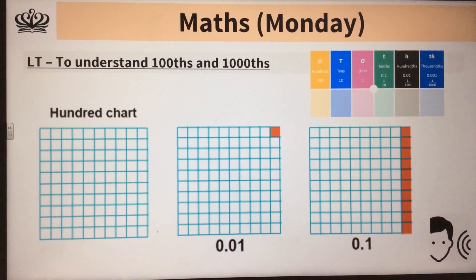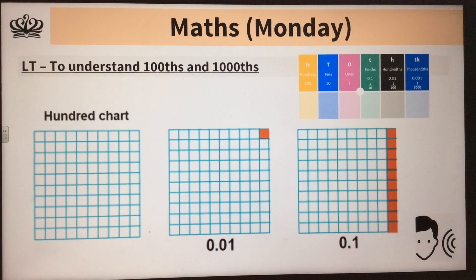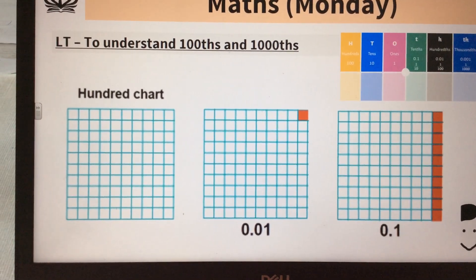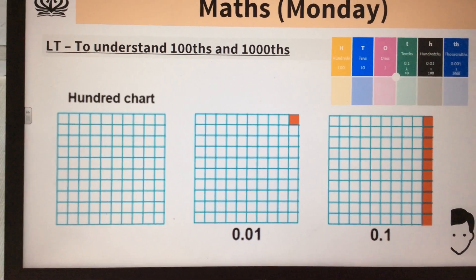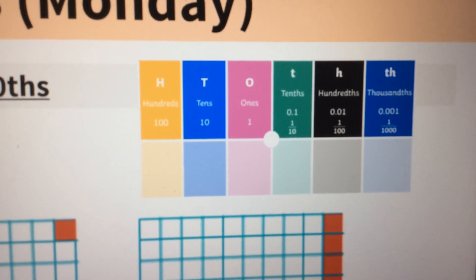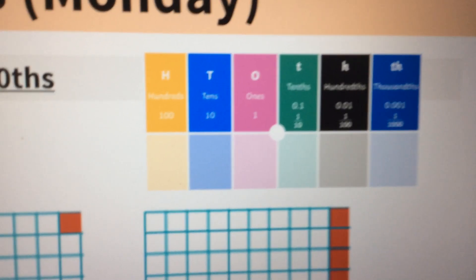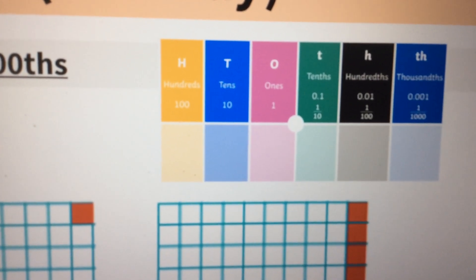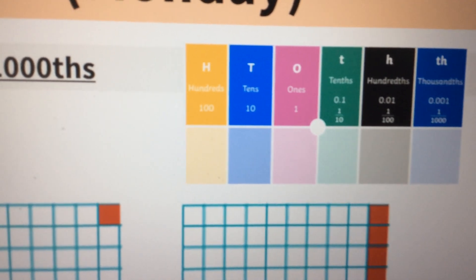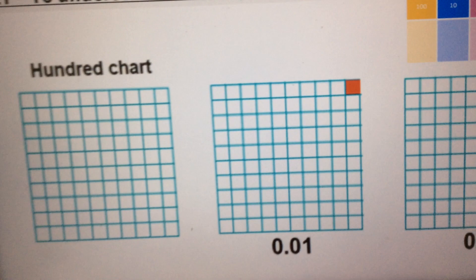Okay, so today's maths, we are understanding hundredths and thousandths. Now we're starting with a bit of a visual here with some hundred squares. I've also put in that place value grid which should help you as well when you're using that terminology to think about where that digit would go in terms of where the decimal point is.